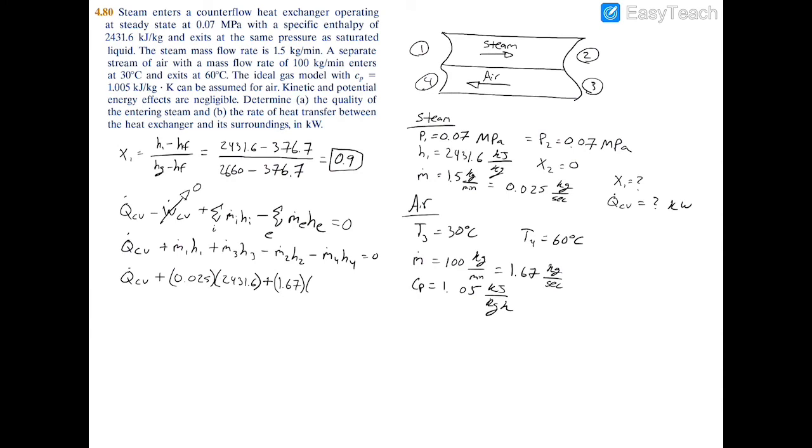So we can multiply 1.67 by 303.21, and then from that we're going to subtract, so I'm going to start a new line here, so subtract m2, which again is 0.025, and that's going to be times h2, which we already calculated as 376.7 from the properties table of the saturated liquid. Finally, we can subtract m4, which is 1.67 times h4, and we don't have h4, but we do have T4, which is 60 degrees Celsius.